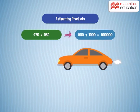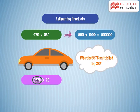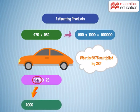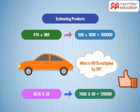Ready to try it yourself? Let's take another example and work with it. What is 6,578 multiplied by 28? 6,578 can be rounded off as 7,000, and 28 will become 30. 7,000 into 30 equals 2,10,000. That makes it so easy, right?